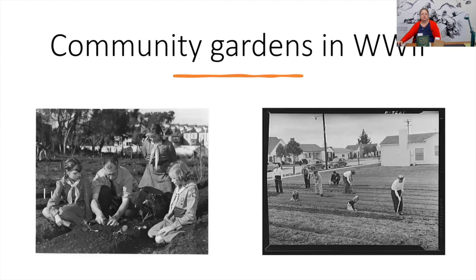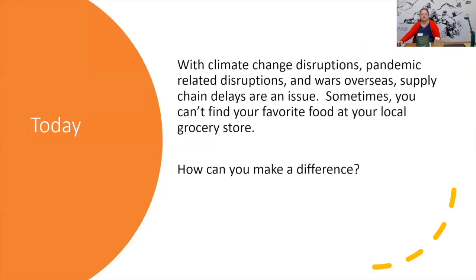Here are some photos of community gardens in World War II. These photos are from the National Archives collection. So why is this important today? With climate change disruptions, pandemic-related disruptions, and wars overseas, supply chain delays are an issue — sometimes you can't find your favorite food at your local grocery store.